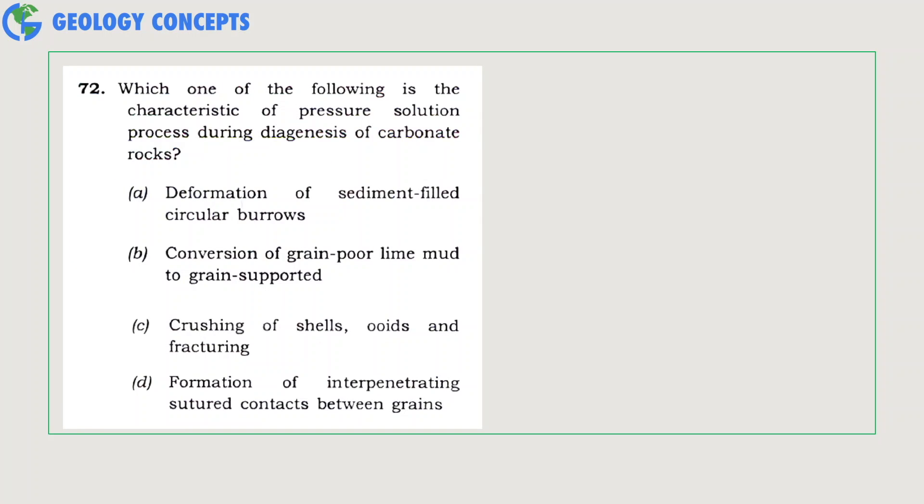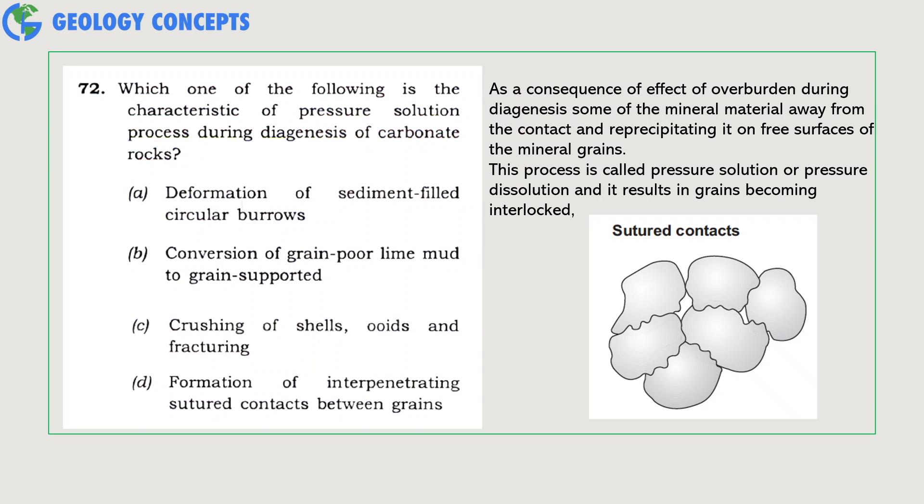Which one of the following is the characteristic of pressure solution process during diagenesis of carbonate rocks? As consequence of the effect of overburden during diagenesis, some of the mineral material dissolves away from the contact and re-precipitates on free surfaces of the mineral grains. This process is called pressure solution or pressure dissolution, and it results in grains becoming interlocked. As you can see from the diagram, this type of contact between the grains is called sutured contact. Hence, option D is the correct answer: formation of interpenetrating sutured contacts between the grains.